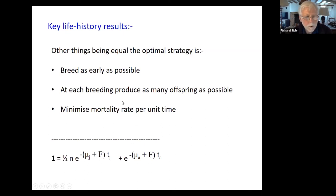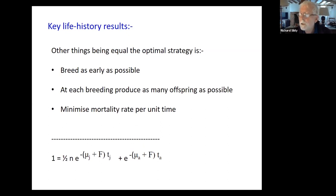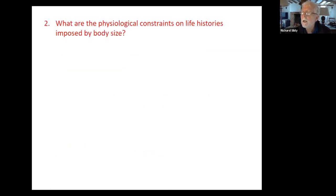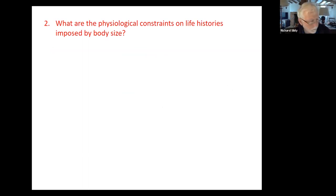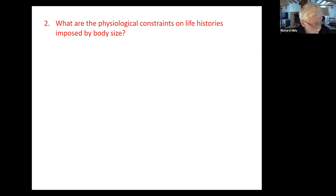So that's the life history part of the talk. I want to go on to consider the constraints that mean you can't do all these things that you'd like to do. I'm going to talk mainly about the constraints imposed by body size.